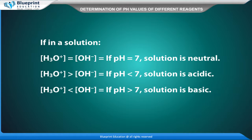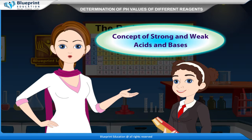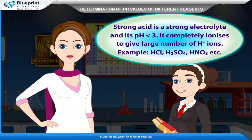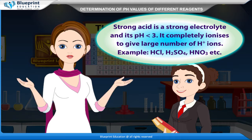If H3O+ equals OH-, then pH equals 7 and the solution is neutral. If H3O+ is greater than OH-, then pH is less than 7 and the solution is acidic. If H3O+ is less than OH-, then pH is greater than 7 and the solution is basic.